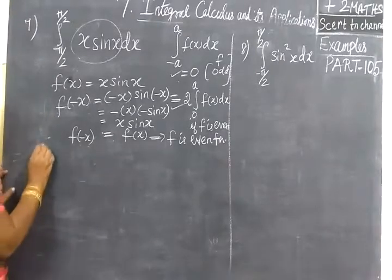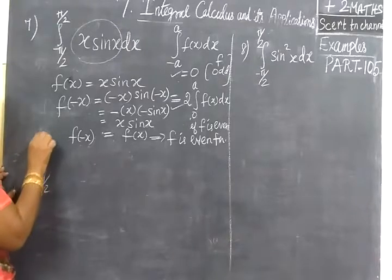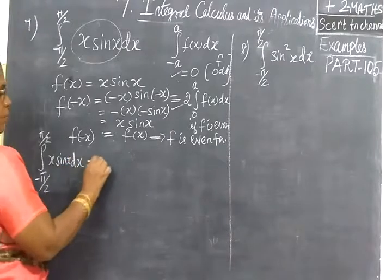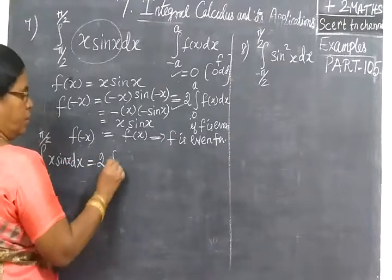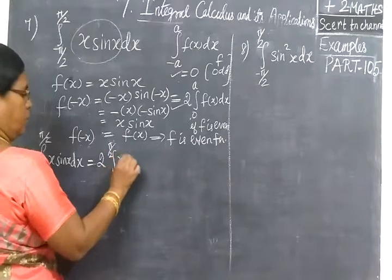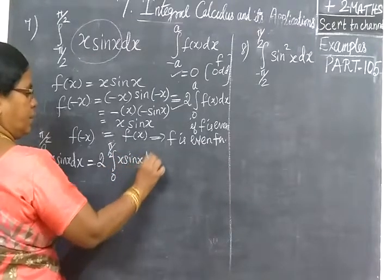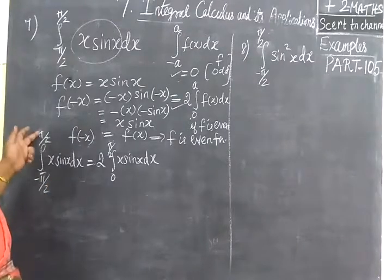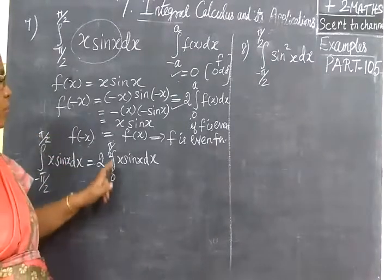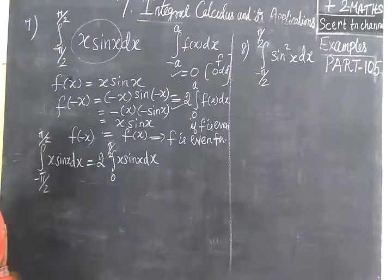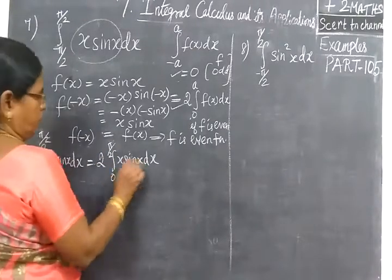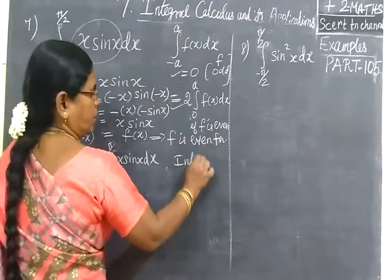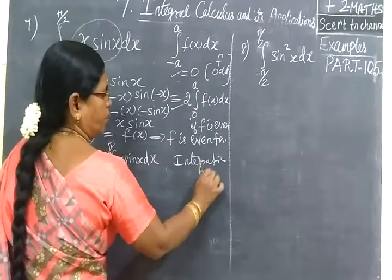So the integral from minus 5π/2 to 5π/2 of x·sin(x) dx equals twice the integral from 0 to 5π/2 of x·sin(x) dx. We apply integration by parts.